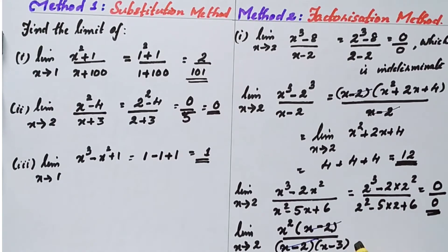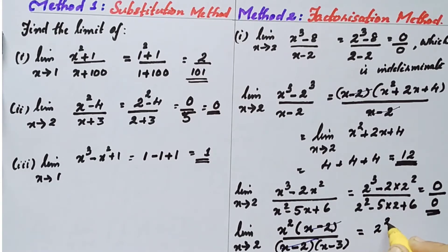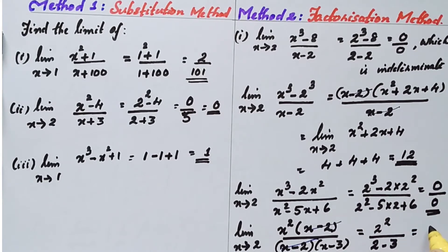After cancellation, substitute x equal to 2: the remaining is x squared divided by (x minus 3), giving 2 squared divided by (2 minus 3) equals 4 divided by negative 1, so the answer is negative 4.